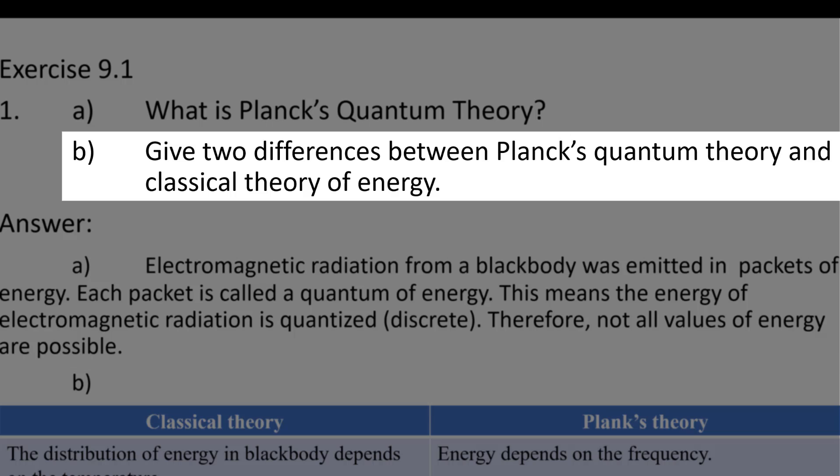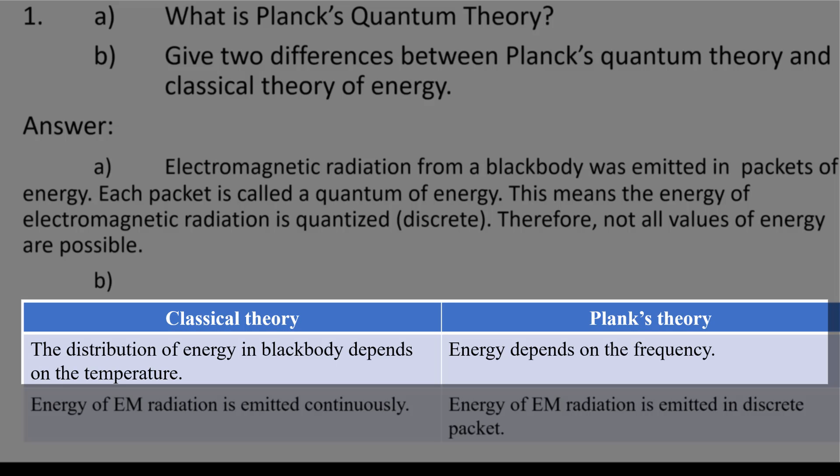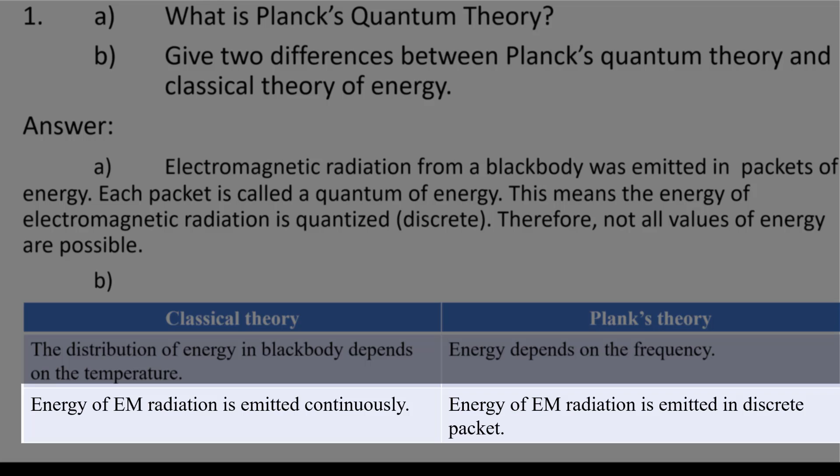Next question, 1b. Give two differences between Planck's quantum theory and classical theory of energy. So you can put it into columns like this, classical theory and Planck's theory. For classical theory, the distribution of energy in black body depends on temperature. While for Planck's theory, the energy depends on frequency. Next point, classical theory, the energy of the EM radiation is emitted continuously, while in Planck's theory, it mentions that energy of the EM radiation is emitted in discrete packet.